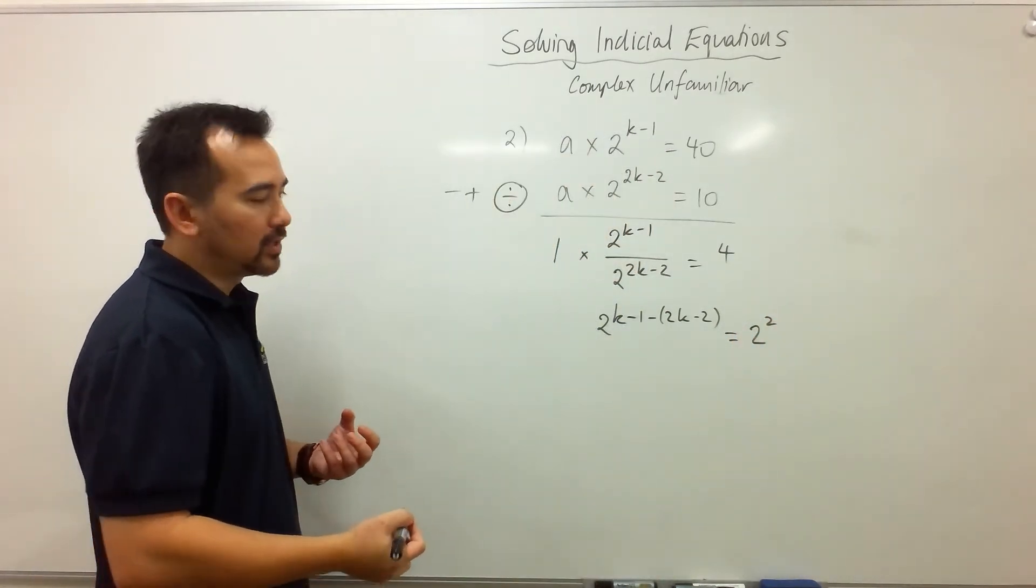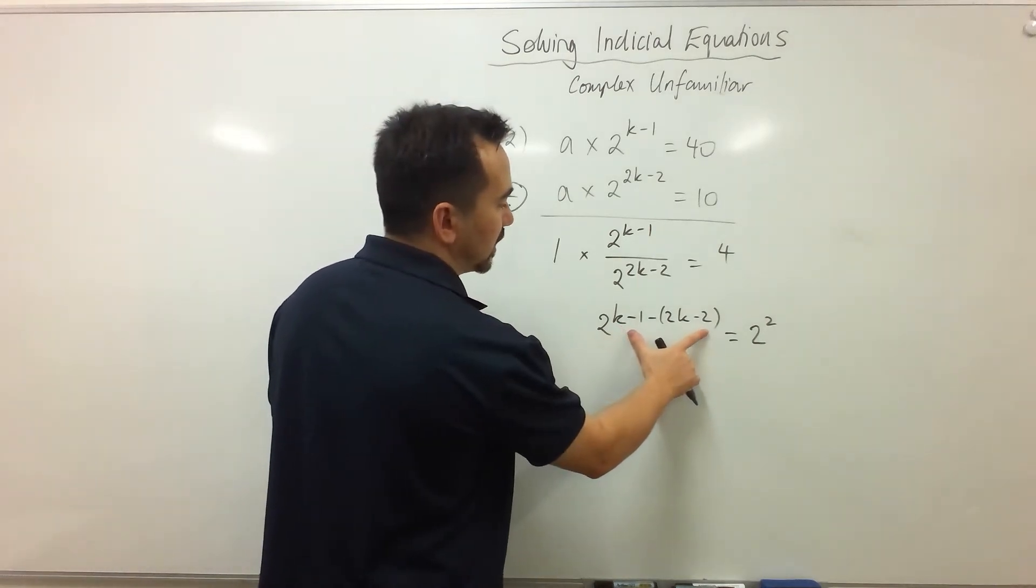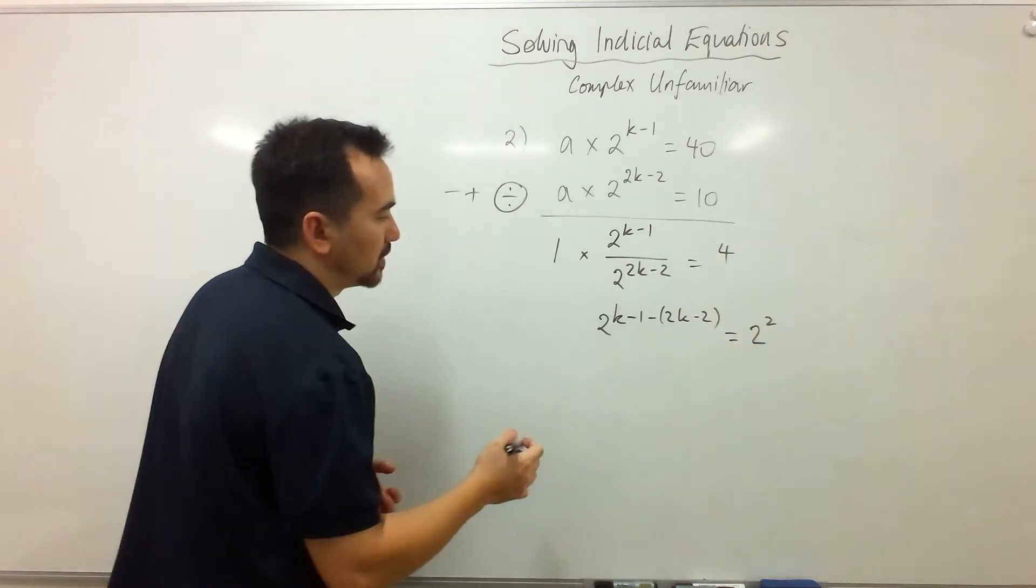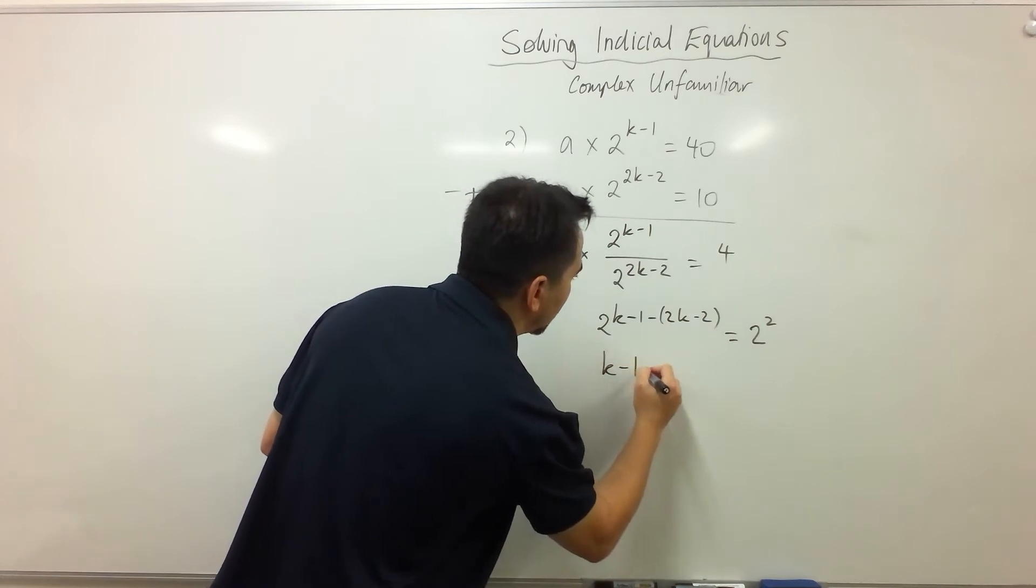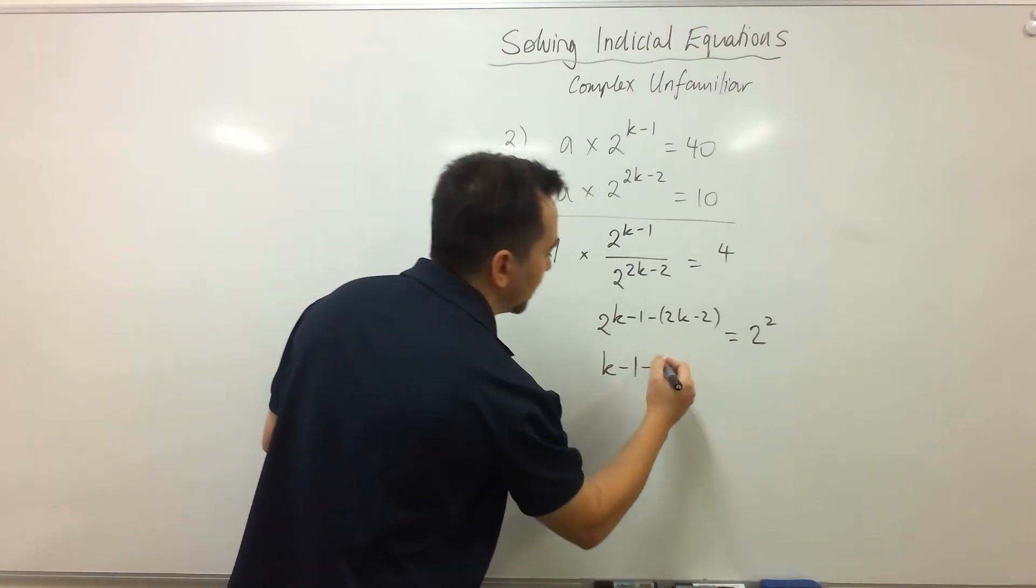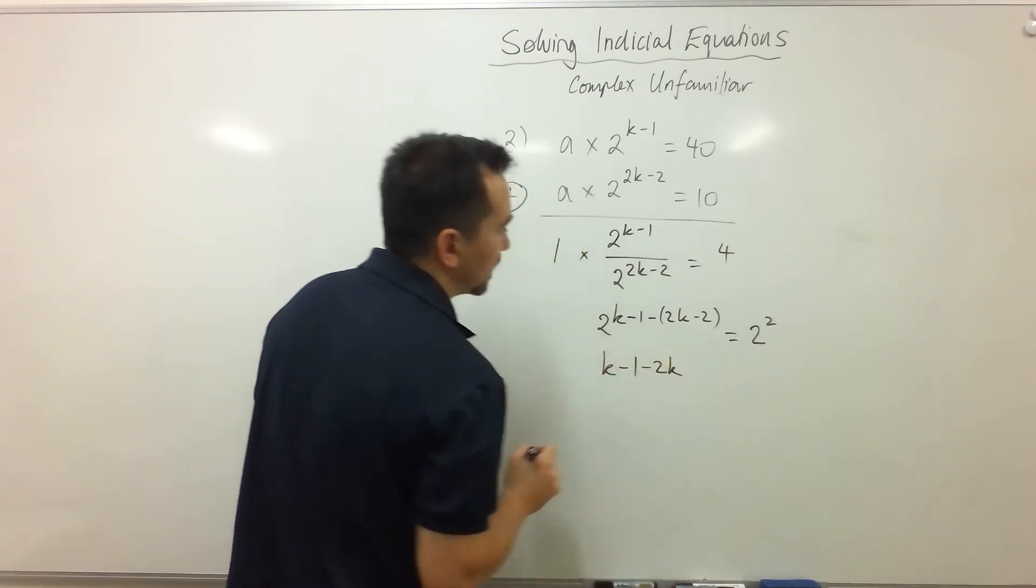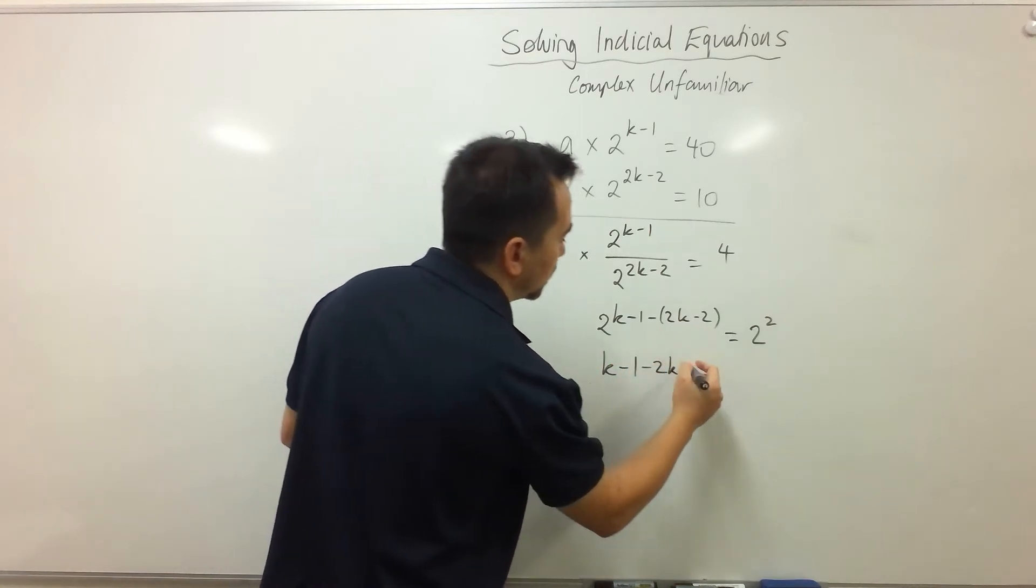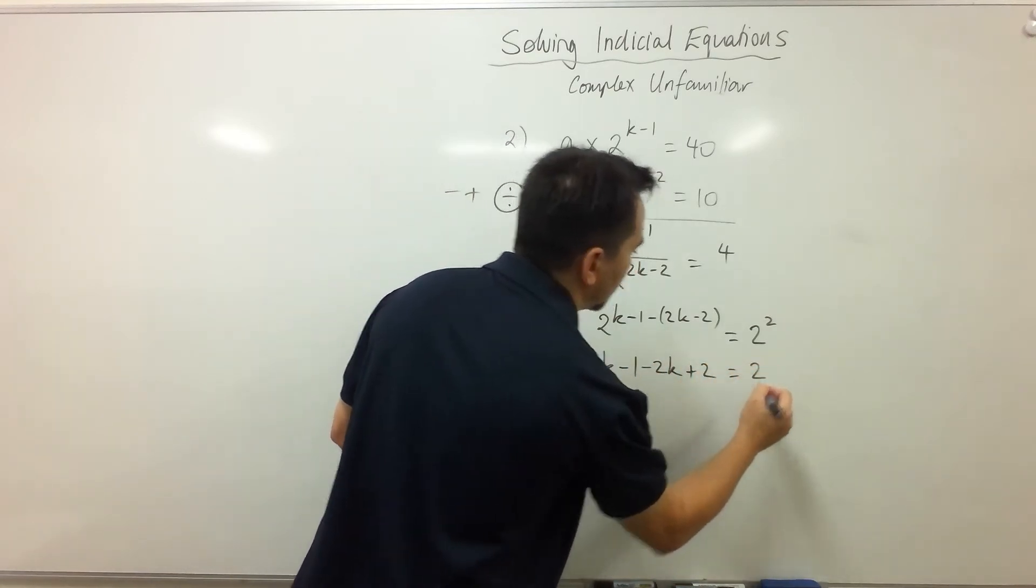So hopefully you can see that we're going to equate the powers. I get 2, I get k take 1, subtract 2k, and then add 2 to make 2.